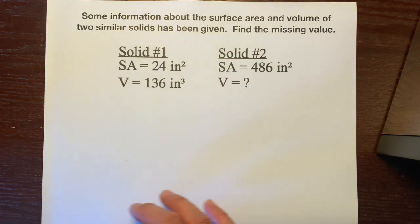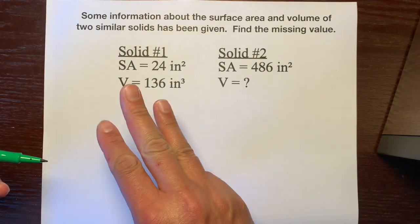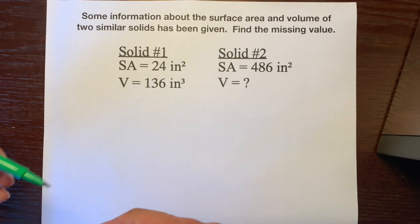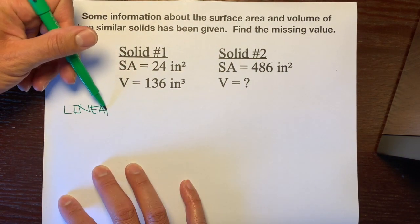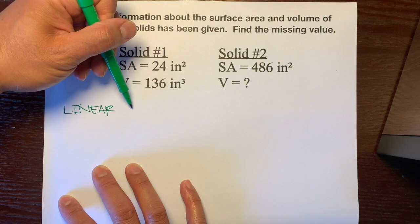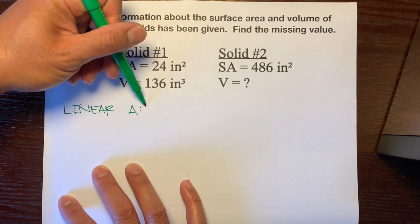So, quick recap, there are three types of scale factor or zoom factor. There's the linear, and it's just how the sides compare to each other. So A to B.